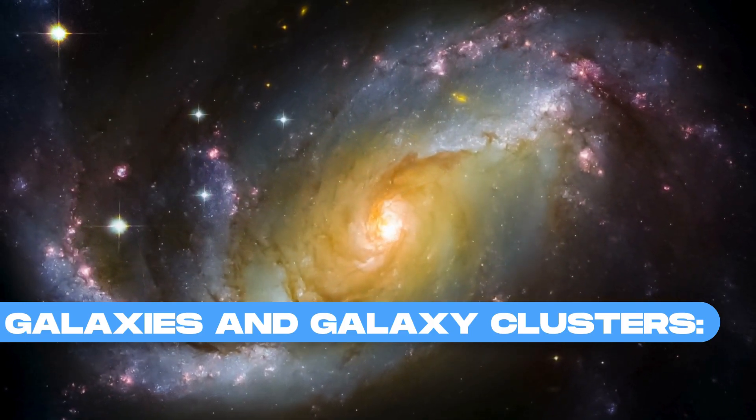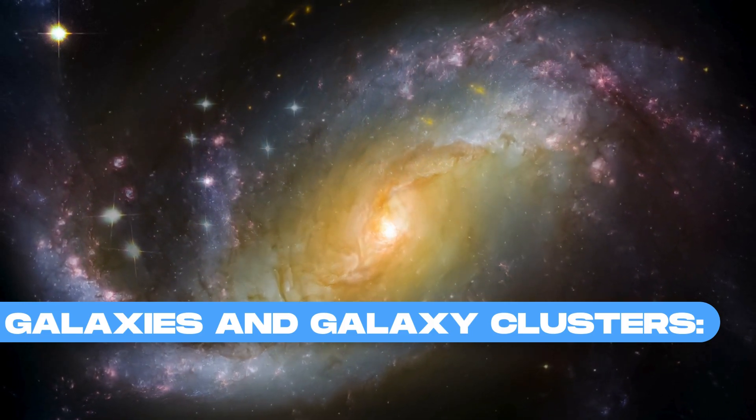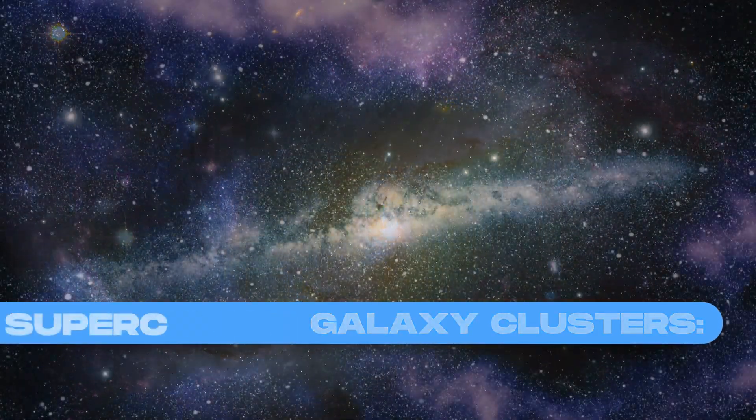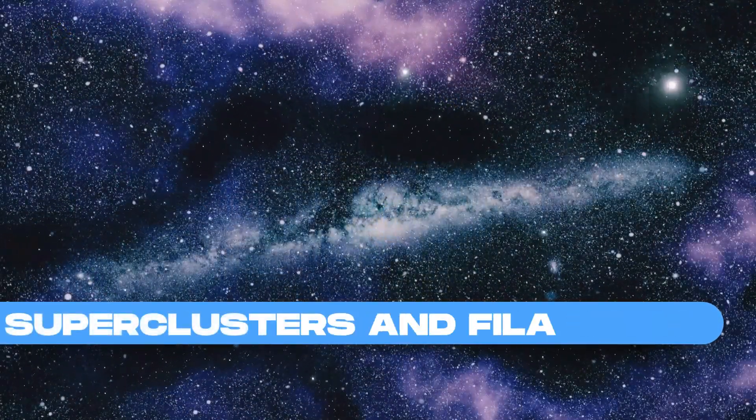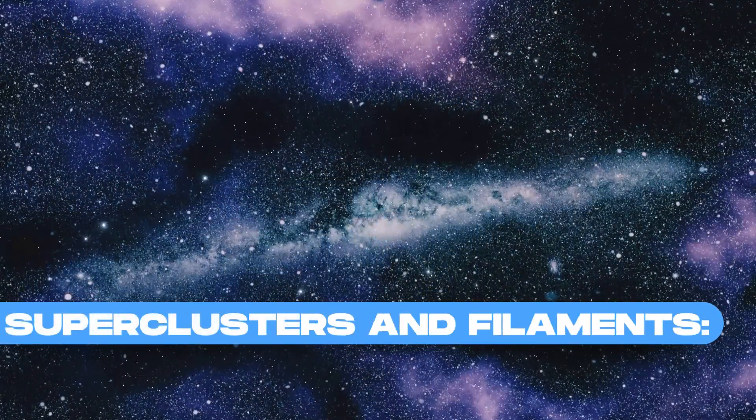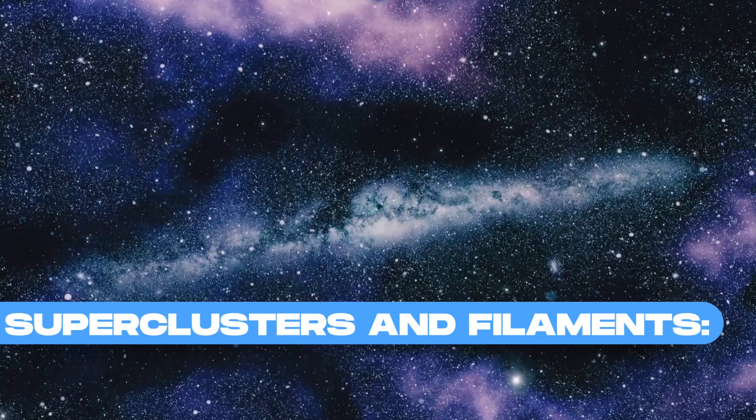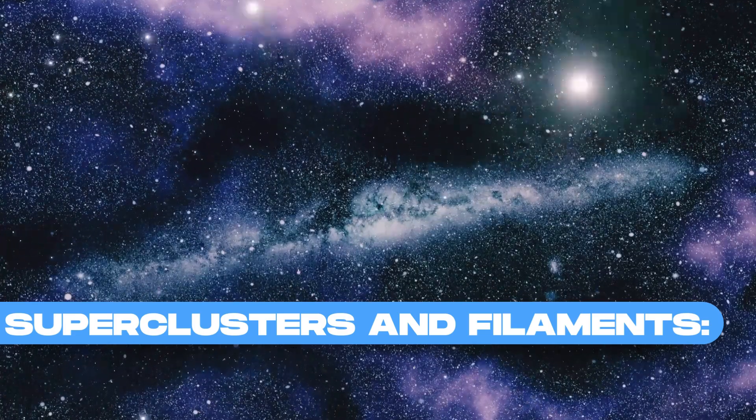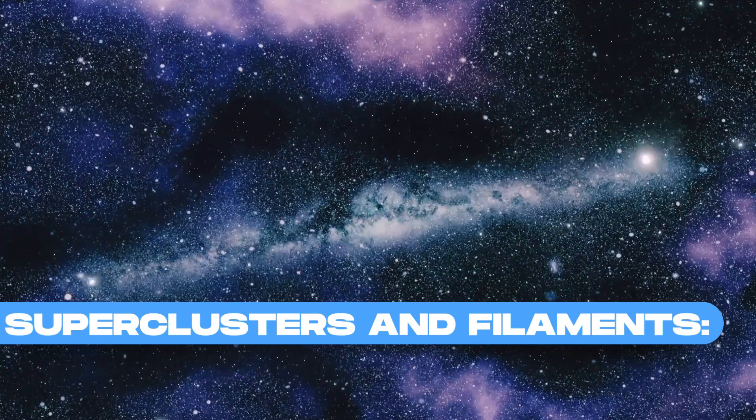Galaxy clusters consist of groups of galaxies bound together by gravity. Superclusters are massive structures that contain multiple galaxy clusters and stretch across hundreds of millions of light-years. They form the largest known coherent structures in the universe.